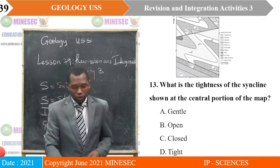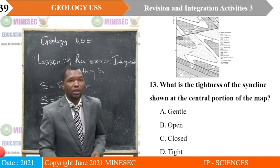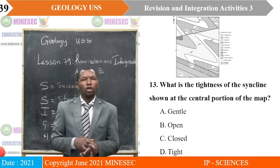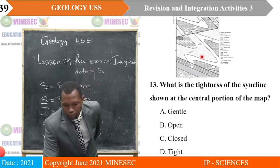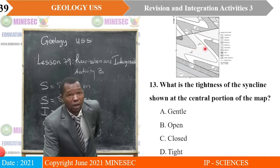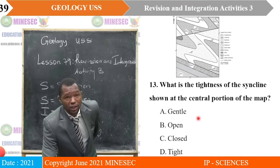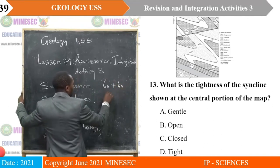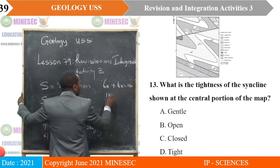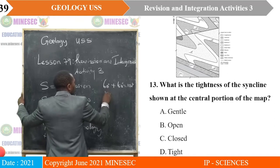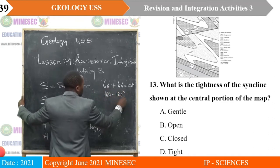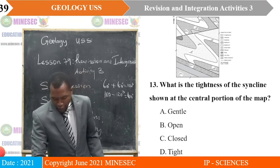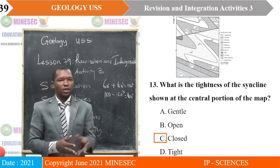Question 13 is related to this map. What is the tightness of the syncline shown at the center portion of the map? You can see dips towards each other with dip values of 60° and 60°. Summing 60 + 60 = 120°; subtracting 180° − 120° = 60°. Since 60° falls between 30° and 70°, the tightness of the fold is closed. C is the correct option.